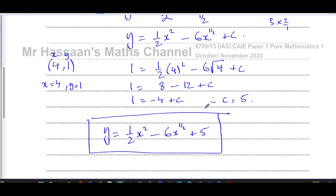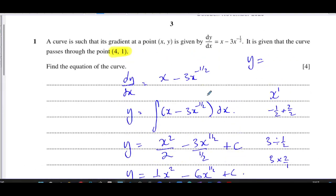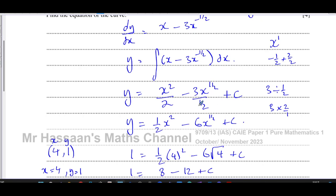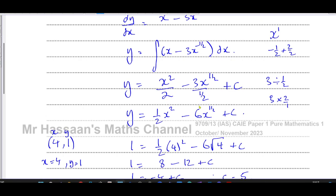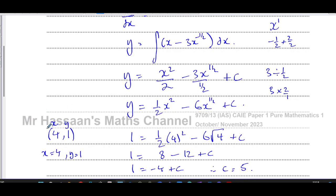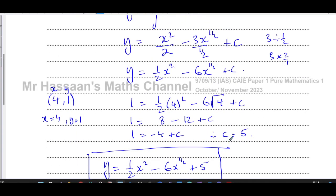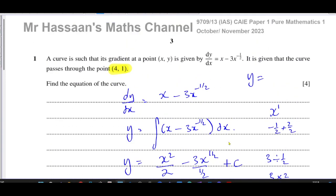Now we can write our equation in the correct form: y equals a half x squared minus 6x to the power of a half plus 5, and that is our answer. That's what you get the marks for in this question. You have to show that you've integrated, you must simplify, you can't leave it as 3 over a half, and you must substitute x as 4, y as 1 into the equation to find c.